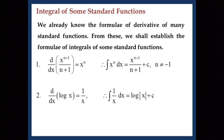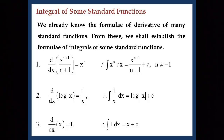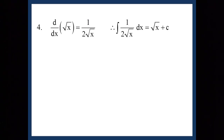Third: d/dx of x = 1, so ∫1 dx = x + c, or simply ∫dx = x + c. Fourth: d/dx of √x = 1/(2√x), so ∫1/(2√x) dx = √x + c. Fifth: d/dx of sin x = cos x, therefore ∫cos x dx = sin x + c. And d/dx of (−cos x) = sin x, therefore ∫sin x dx = −cos x + c.